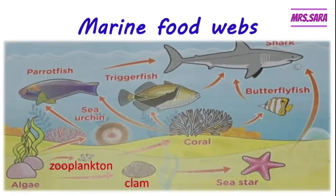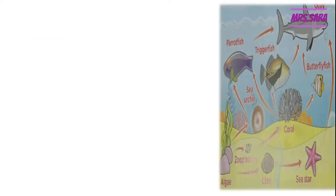Now we are going to talk about the marine food web, Primary 5. As you can see in this picture, you can see shark, butterflyfish, sea star, coral reef, clam, zooplankton, algae, parrotfish, sea urchin, and triggerfish. If you look closely, you can see that the algae are the producers under the water — they are the plants under the water that make their own food.